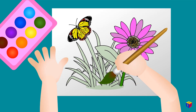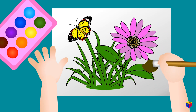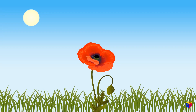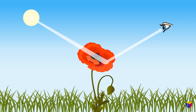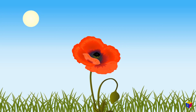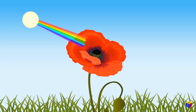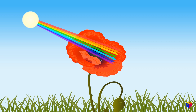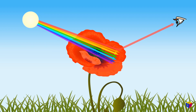Now we can explain why we see different colors. We see an object due to the fact that it reflects the light falling on it. However, sunlight is made up of rays of different colors. Objects of different colors reflect rays of their own color. For example, red objects absorb all rays except red rays, which are reflected back into our eyes. And what rays will be reflected from these objects?